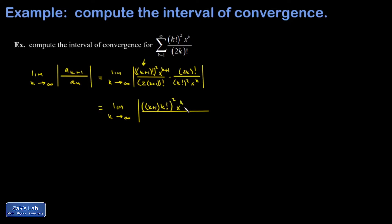Just to highlight a cancellation, I'm also going to write x to the k+1 as x to the k times x. And then I have this 2k factorial hanging around in the denominator. I'll make a little bit of progress on this factorial - that's 2k+2 all factorial. And then I have k factorial squared and x to the k.